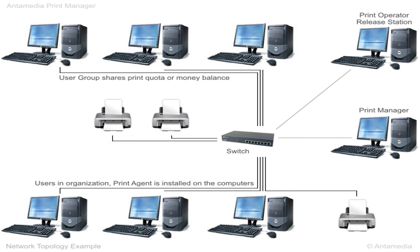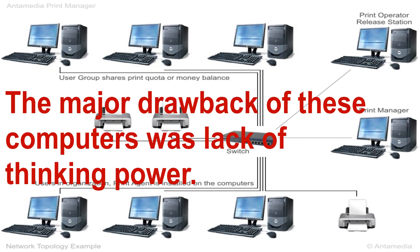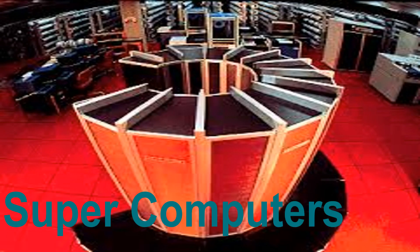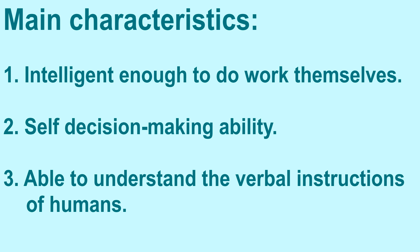Till the fourth generation of computers, the major stress was on improving the hardware, which resulted in smaller size and faster speed. The major drawback of these computers was the lack of thinking power. Now let's discuss about the fifth generation computers. The fifth generation computers are based on artificial intelligence and are still under development. Due to artificial intelligence, these computers will be intelligent enough to do work themselves and take decisions independently. Main characteristics will include: intelligent enough to do work themselves, self decision-making ability, and able to understand verbal instructions of humans.